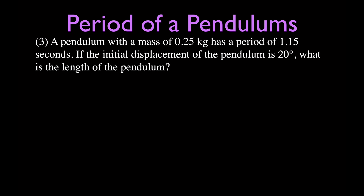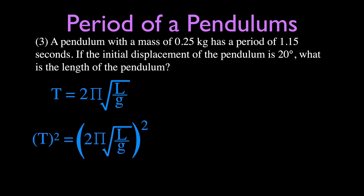Problem 3: A pendulum has a mass of 0.25 kilograms, a period of 1.15 seconds, and is pulled back 20 degrees. What is the length of the pendulum? We use the period equation T = 2π√(L/g), but now we need to solve for L. To eliminate the square root, we square both sides, giving T² = 4π²(L/g).